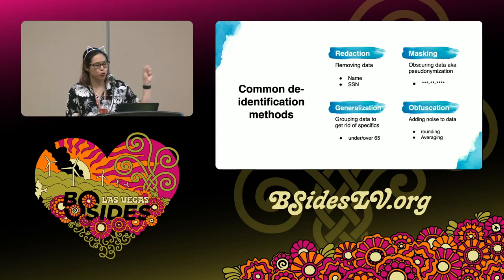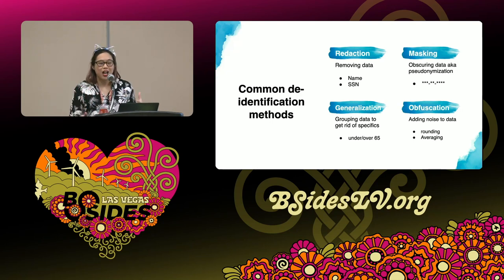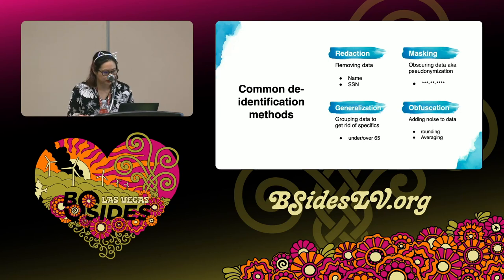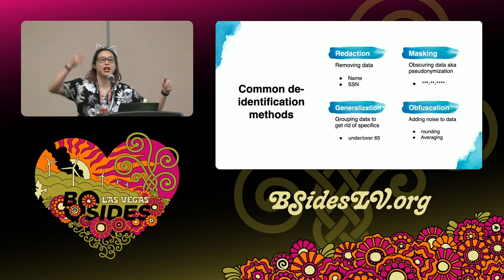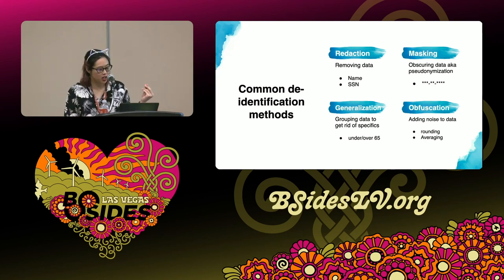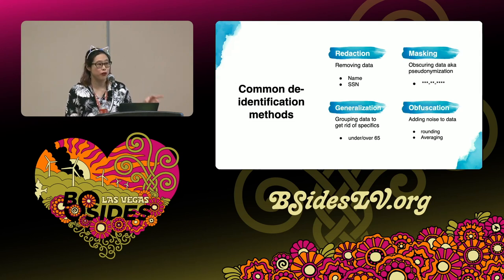Next is generalization — the idea of grouping your data to get rid of specifics. For example, if you have a data set with people's ages, instead of publishing their actual age, can you say these people are over 18 or under 18? Over 65 or under 65? Then we get into obfuscation — the idea of adding noise to your data. If we think about the data set with ages, instead of having the actual age, can you round their age up or down to the nearest decade? Or can you average out everybody's age in the data set to be, say, between 46 and 54? A note: obfuscation can be aggressive and can make your data harder to use. But if you are dealing with data sets with very sensitive information like healthcare records, this could be a good way to go.